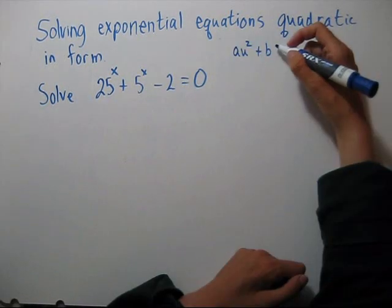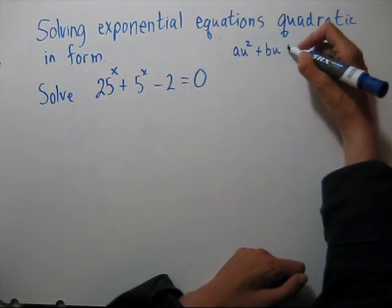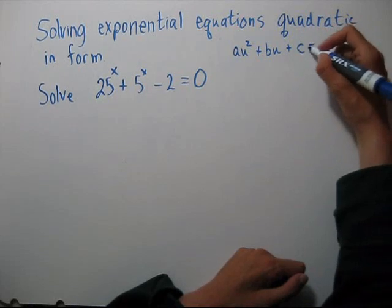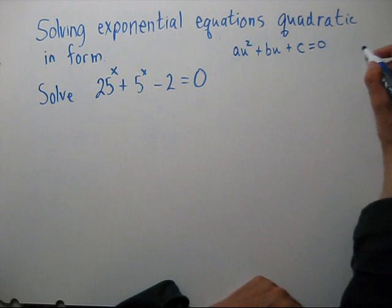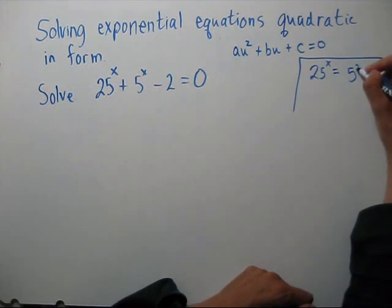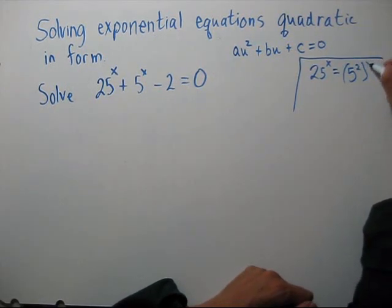Let's solve this equation. We're going to manipulate it so it looks like a quadratic equation. Let's work with the 25 to the x. We can write it as 5 squared to the x.